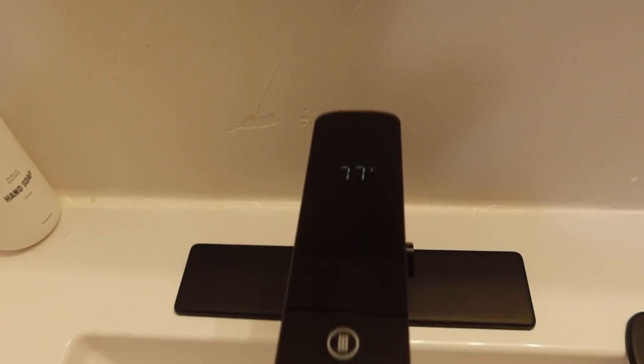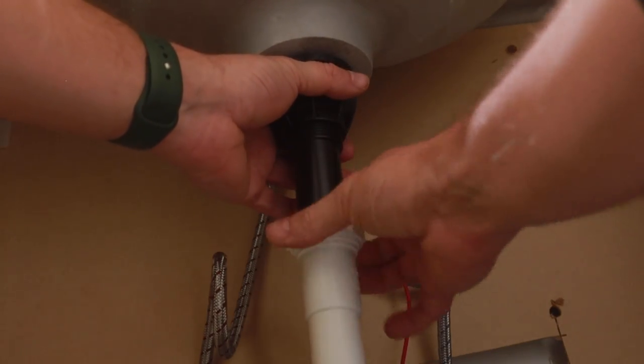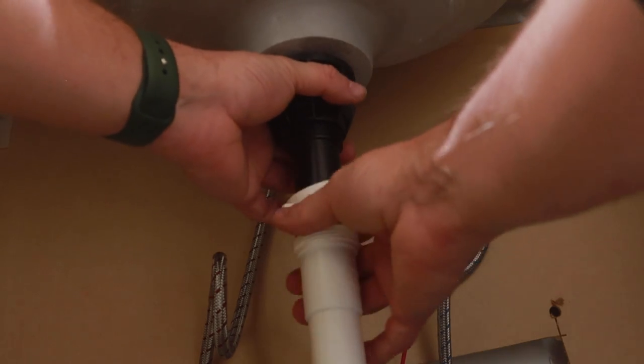Now in this case, I already have a black pop-up drain assembly installed but the box comes with a new one, so for the sake of this video, I'll show you how to replace that as well. The first thing to do is loosen the big nut that holds the assembly in place from beneath the sink and remove it.